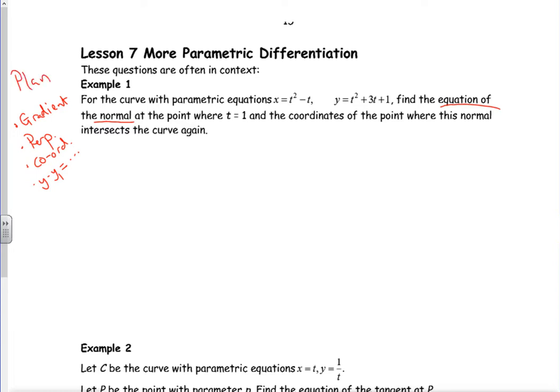Okay, so dx/dt is 2t minus 1, dy/dt is 2t plus 3. Now because it says t is 1, it's up to you if you do it now or do it later. So you could work out what the t value is, so when t is 1, dx/dt is just 1 and dy/dt would be 5. So dy/dx would be 5 over 1 is 5, or you could put it as 2t plus 3 over 2t minus 1 and then put your numbers in.